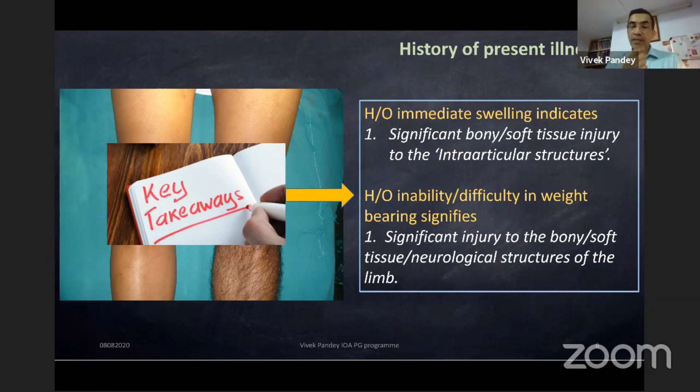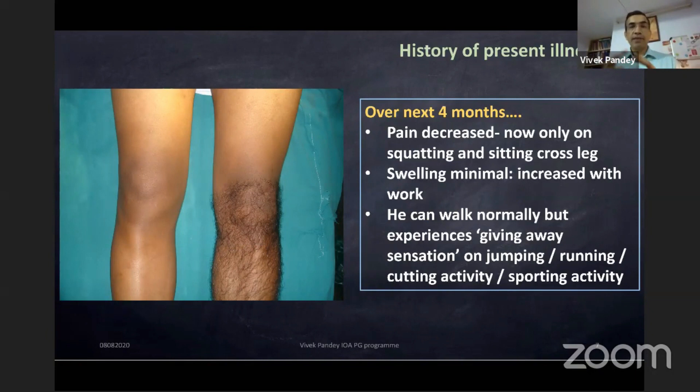Whenever someone says he was unable to walk or had difficulty weight-bearing, it always signifies a significant injury to bony, soft tissue, or neurological structures of the limb. I have still not said you should make a diagnosis of ACL tear — that's what I call a tunnel-vision approach: cap on your eyes, you can't think.